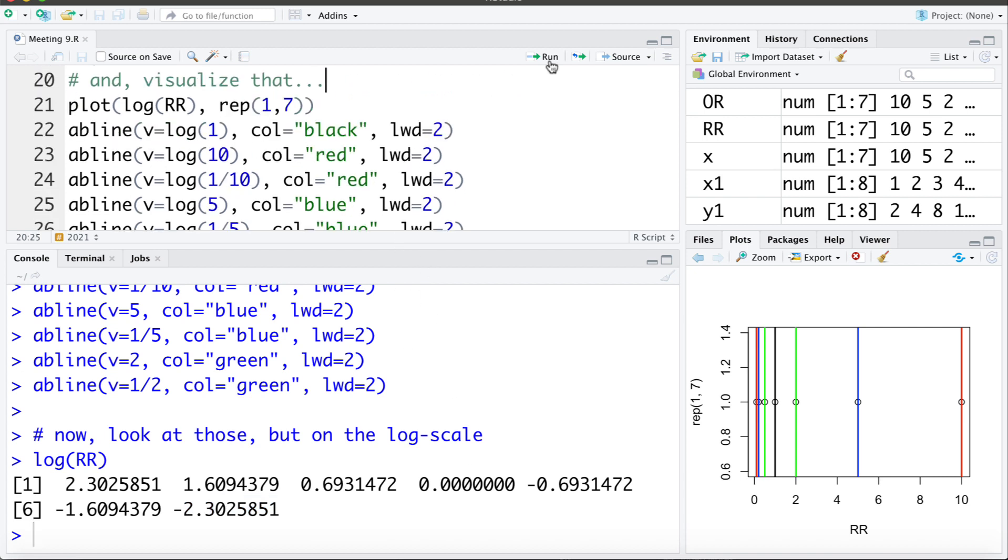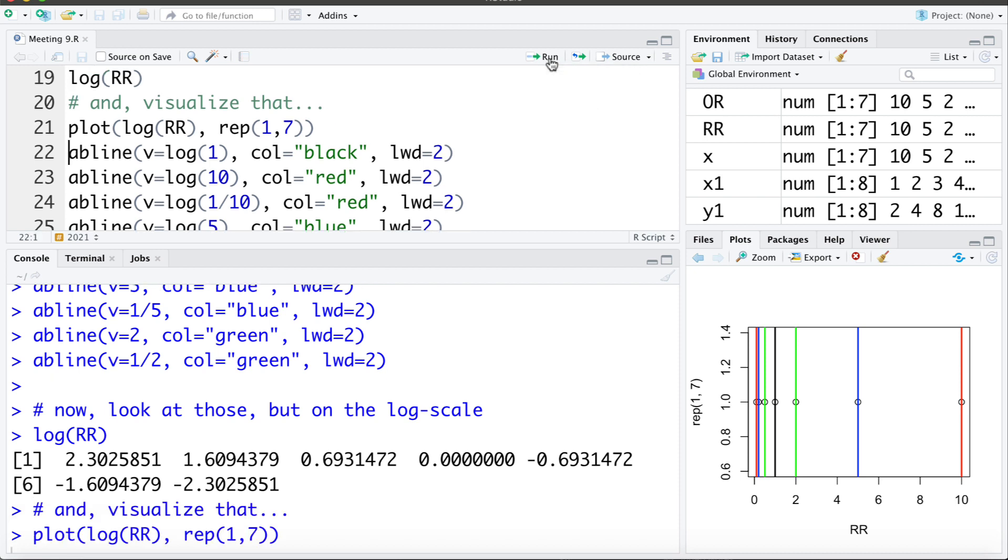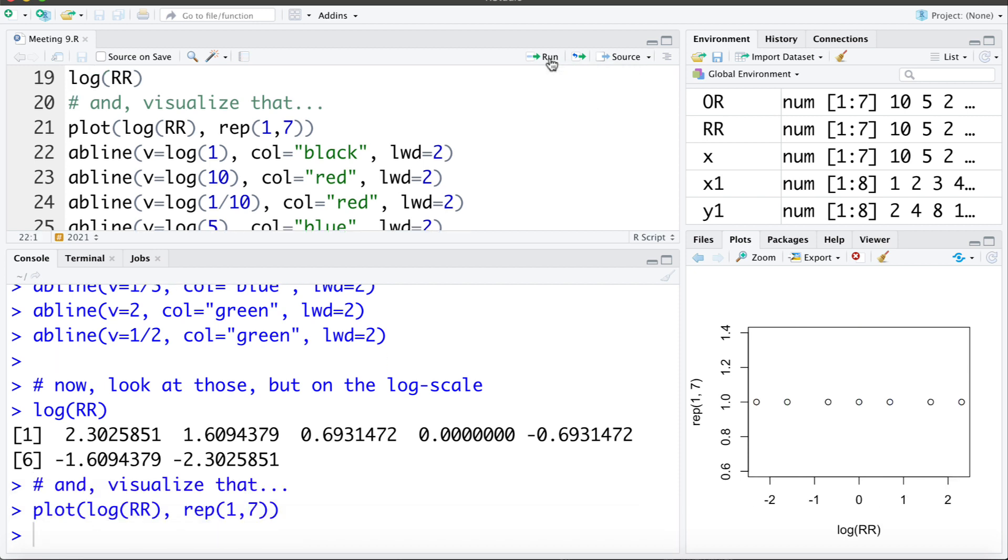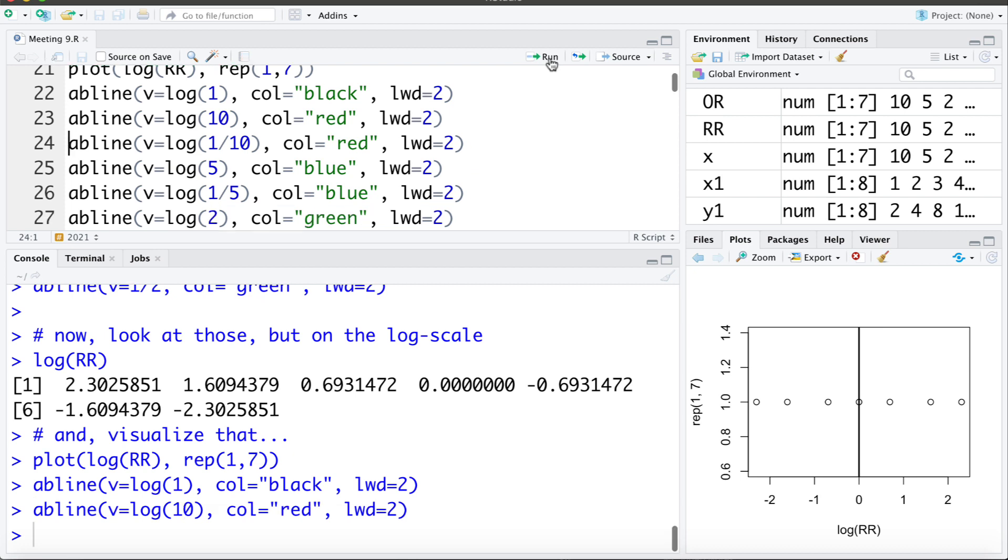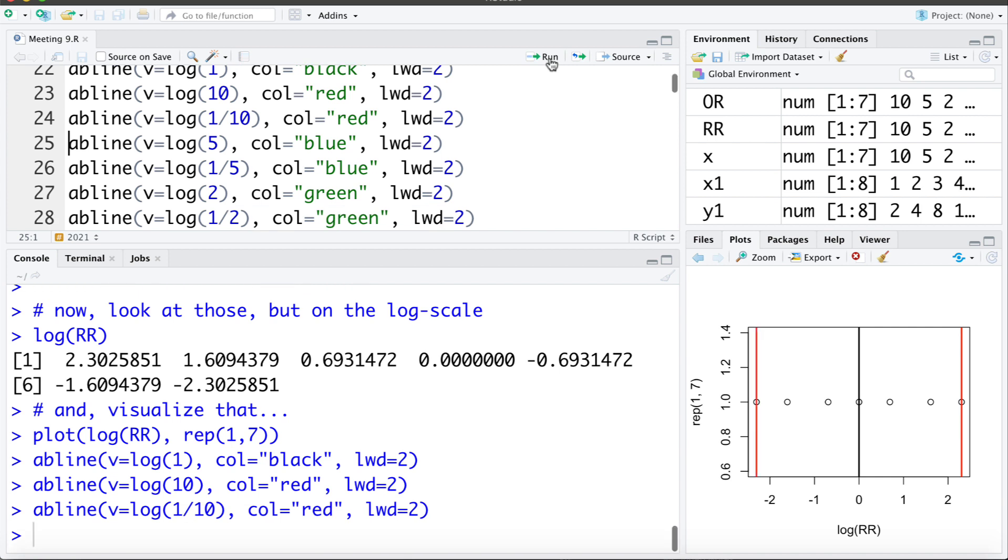Let's visualize that. I'm plotting the log rate ratios versus 1 to 7. I'll add a line at the null value of log rate ratio of 1, which is 0. Let's add red lines at the log of 10 and log of 1/10. We can see these are now the same distance from that null value - 10 times larger, 10 times smaller.